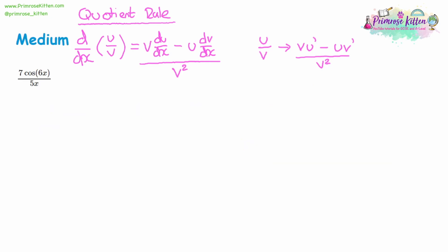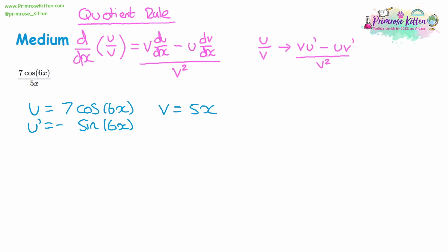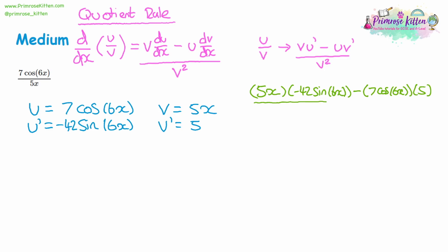The next set of questions use trigonometry. U is 7 cos 6x and v is 5x. When you differentiate cos you get negative sine, and you bring the coefficient of the angle out: 7 times 6 gives negative 42 sine 6x. V dash is just 5. Substituting: v is 5x multiplied by u dash negative 42 sine 6x, take away u which is 7 cos 6x multiplied by v dash 5, all divided by v squared which is 5x squared.